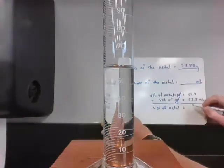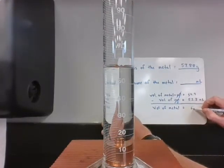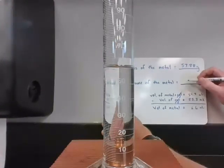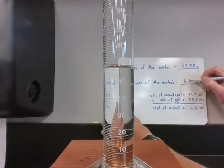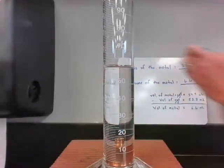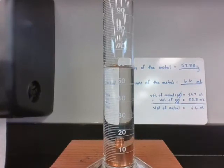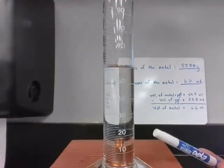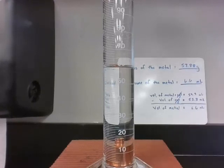I then do my subtraction and get 6.6 milliliters, which I record in my data table. That's how to determine the volume of your metal by water displacement. You typically do this when determining density, which will be in our next lesson. Thank you.